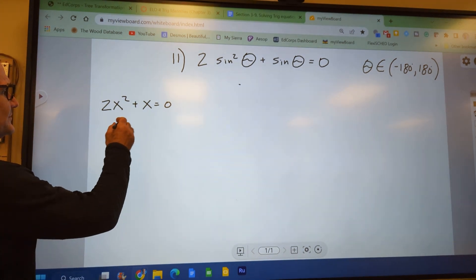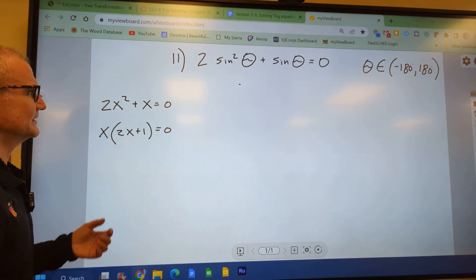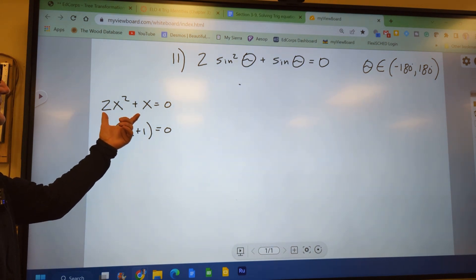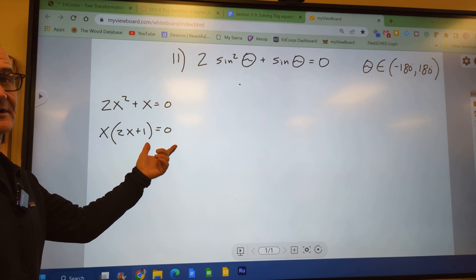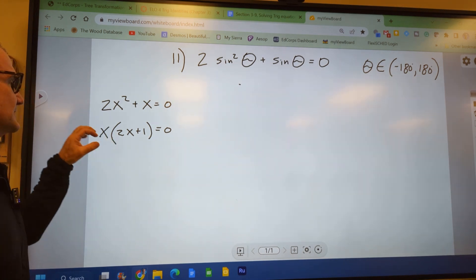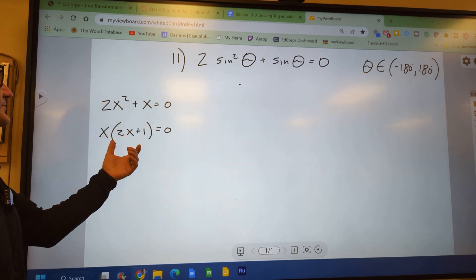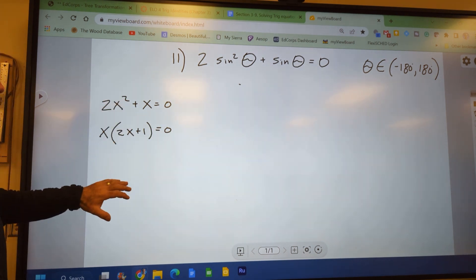That common term is x. I'd pull that x out front, leaving me with the 2x plus 1 equal to 0. And the whole reason I do this, the whole reason I factor this, is if I could have things multiplied together equal 0, I could use the zero product property to solve. So either x equals 0 or 2x plus 1 equals 0. So that's kind of the algebra equivalent.